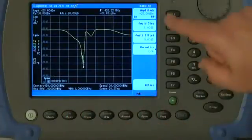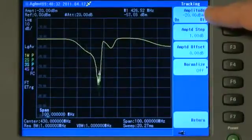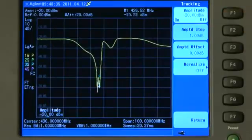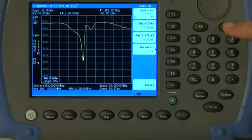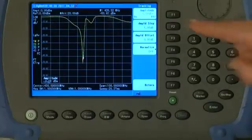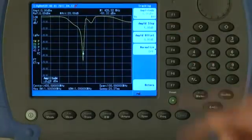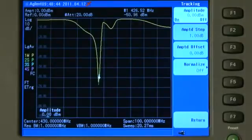Well, if I press the Mesh key, you will see that the amplitude of the tracking generator is set to minus 20 dBm. So let us select that and increase it to its maximum value, which is 0 dBm. And now you can see we have gained about 20 dB of dynamic range.